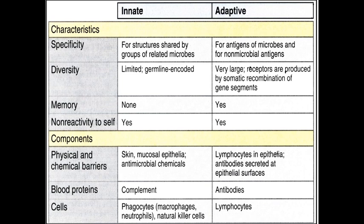Both the innate and adaptive systems can become pathological and start attacking the body's own cells. Regarding the blood proteins in the innate system, the complement is involved, but only the alternative and lectin pathways are part of the innate system. The classical pathway of the complement system requires an antibody and is therefore associated with the adaptive immune system. Antibodies refer to the humoral response, which will be discussed later on. The cells associated with the different immune systems have been mentioned here.